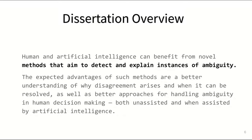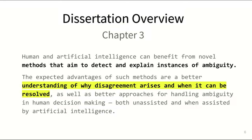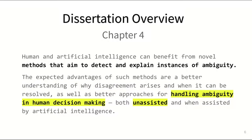The expected advantages of such systems would be a better understanding of why disagreement arises and when it can be resolved, which we address in Chapter 3. And approaches for handling ambiguity in human decision making — we look at the case of unassisted decision making in Chapter 4, and we address the case of decision making assisted by AI in Chapter 5.